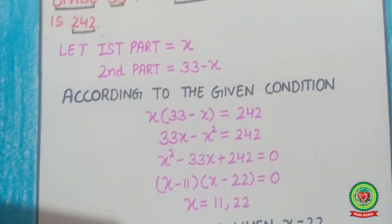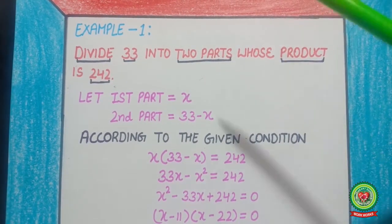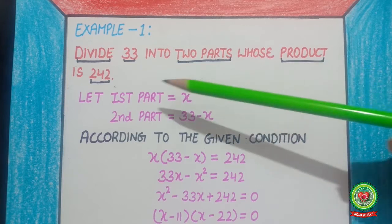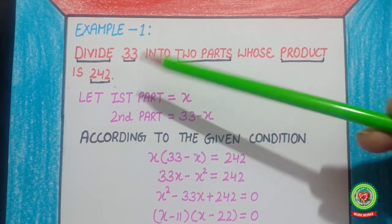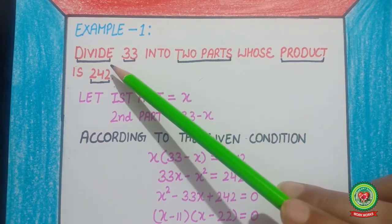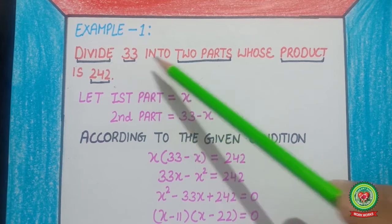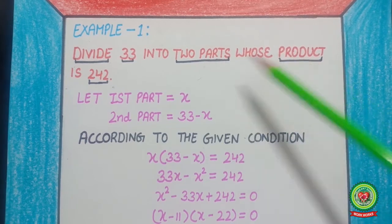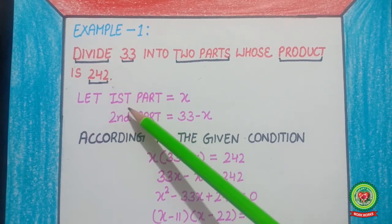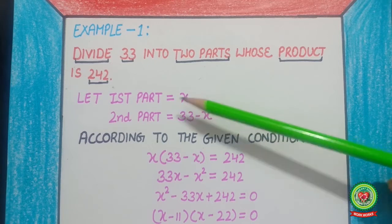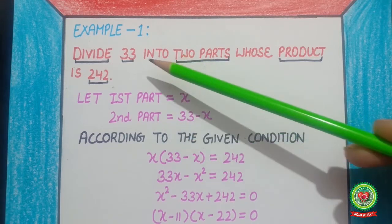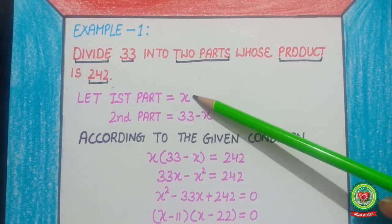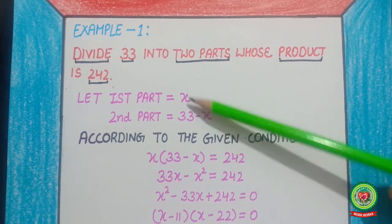Our first example is: divide 33 into 2 parts whose product is 242. First of all, we are going to underline the keywords — divide number 33, two parts, and their product is 242. So, let the first part be x and the second part be 33 minus x. Now, according to the given condition, the product of these two parts equals 242.